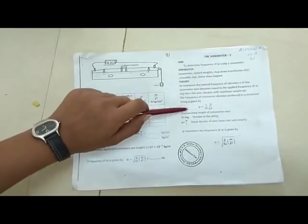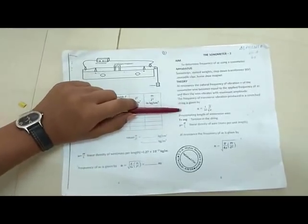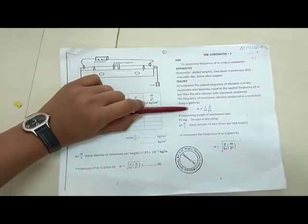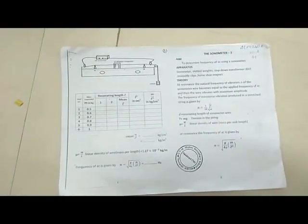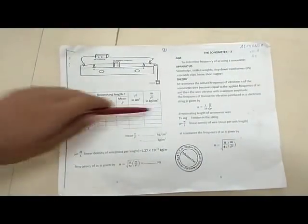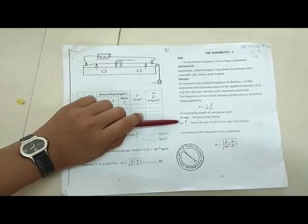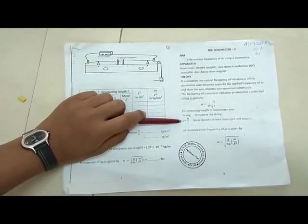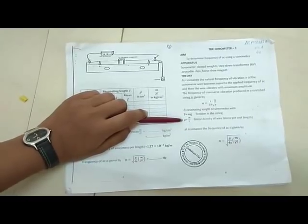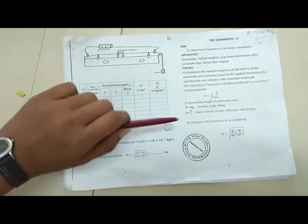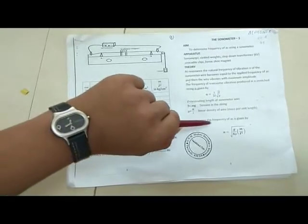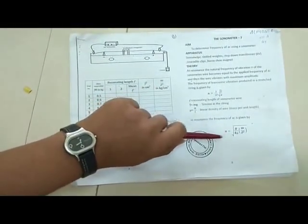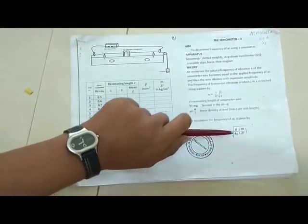n is the frequency of transverse vibration produced in a stretched string. n equals 1 by 2L times square root of T by mu, where L is the resonating length of the sonometer wire, T equals mg which is the tension of the string, and mu equals m by L, the linear density of wire. At resonance, the frequency of AC equals n equals root g by 4 mu into m by L square.